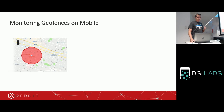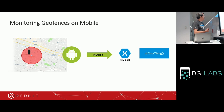This is how monitoring geofences works. In this animation, I enter the geofence, the system triggers that event, notifies my app, and then my app does what I want — show a message or whatever. This is how the mobile platform monitors a geofence.